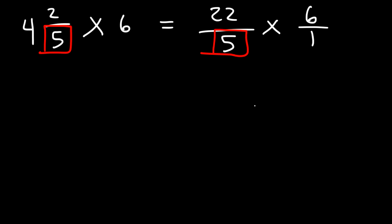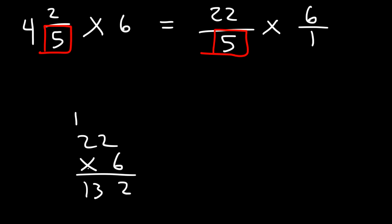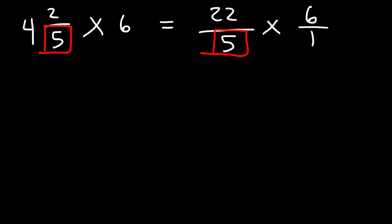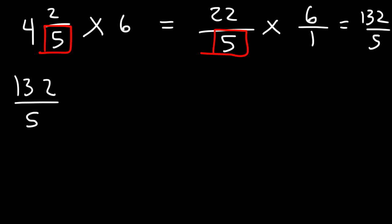Now we need to multiply 22 over 5 by 6, or 6 over 1. Multiplying across: 22 times 6 — 2 times 6 is 12, carry the 1, 2 times 6 is 12 plus 1 is 13 — so 22 times 6 is 132. This equals 132 over 5.